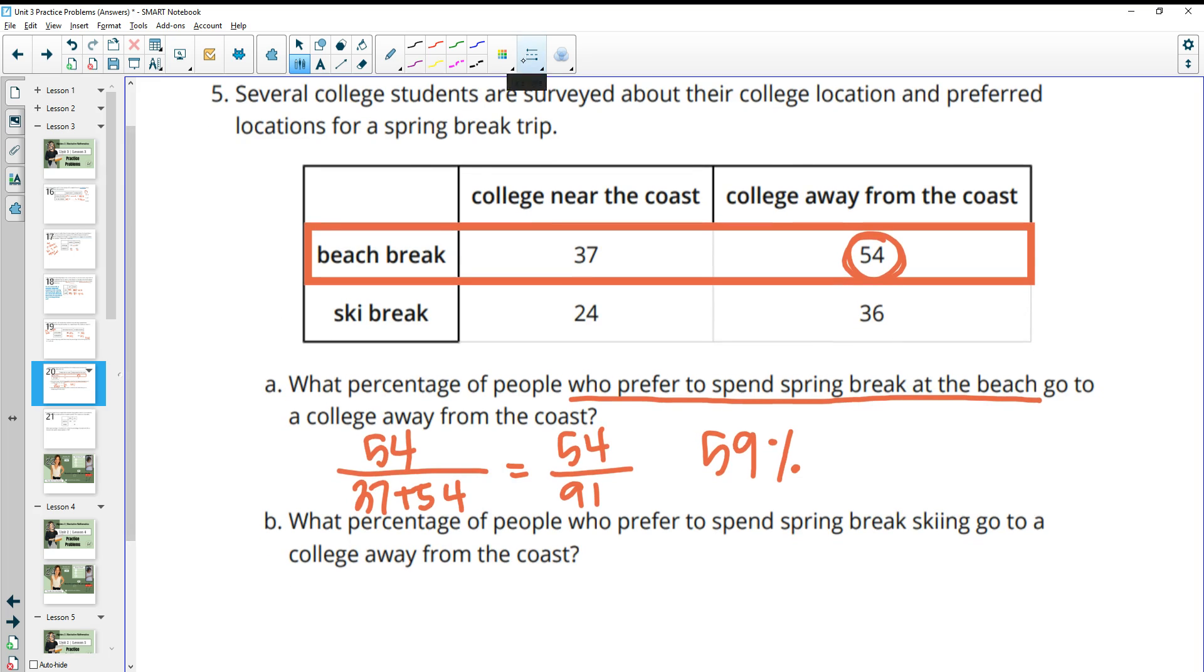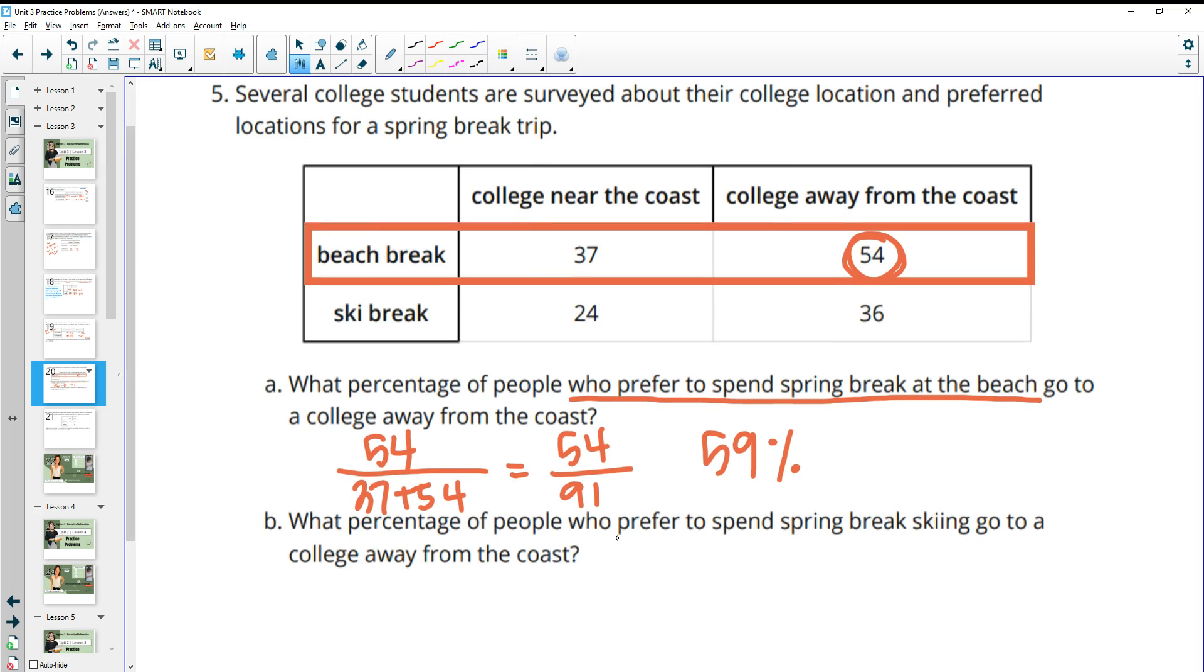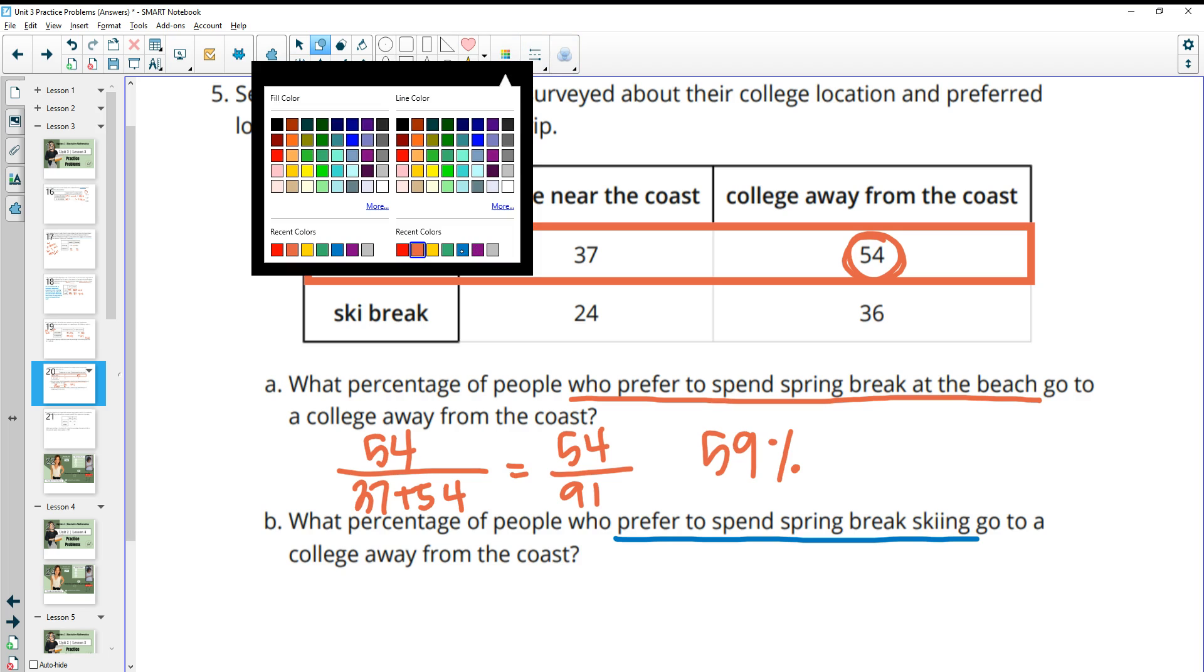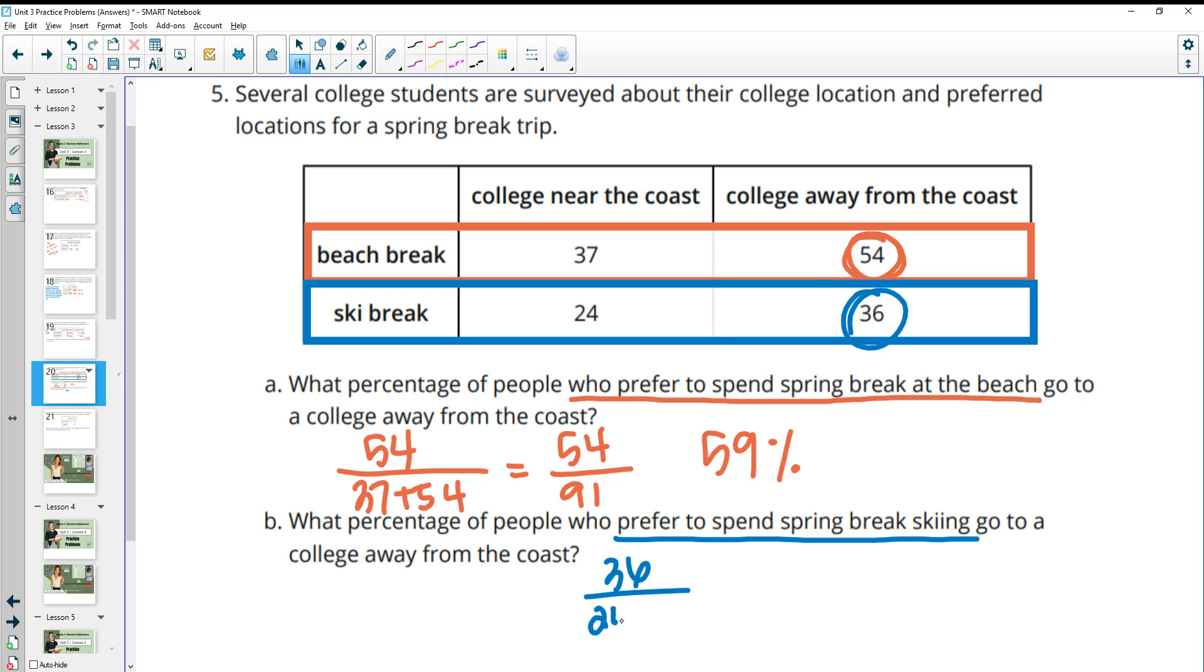Part B says what percentage of people who prefer to spring break skiing? Okay, so now we're in the skiing category. So let's isolate that. So now we're just looking at these people prefer to go to college away from the coast. So away from the coast is 36 over just those spring breakers that like skiing. And so then that's going to be 36 divided by 60. And that is going to give you 60%.